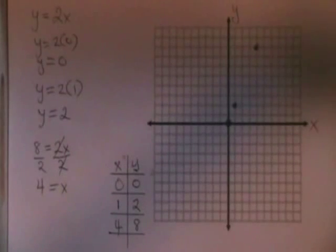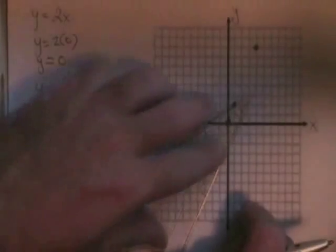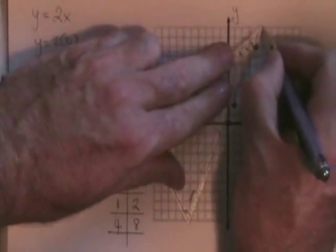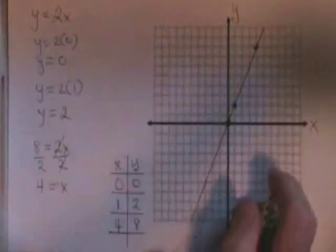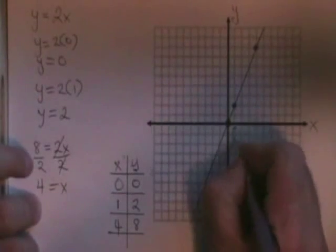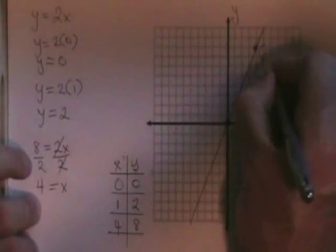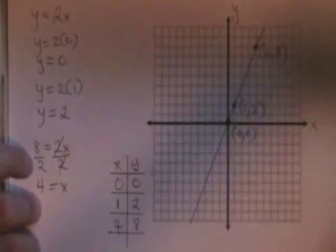The three points do indeed form a straight line, and we draw a line through them and all the way across our graph. Label our points. And we are finished.